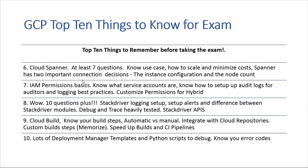Number nine: another developer-focused area was Cloud Build — what it is and why you want to use it. If you're deploying a CI pipeline in Google Cloud, this is probably the tool you'll want to use. Know your build steps — go to the Cloud Build documentation site and memorize them; you'll see them at least a couple of times. Know that there are automatic and manual processes to kick off Cloud Build. Understand how to integrate this with Cloud Repositories, what the process is for custom builds, and how to speed up the build process.